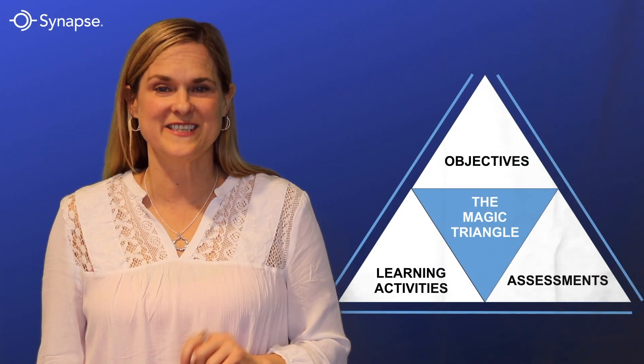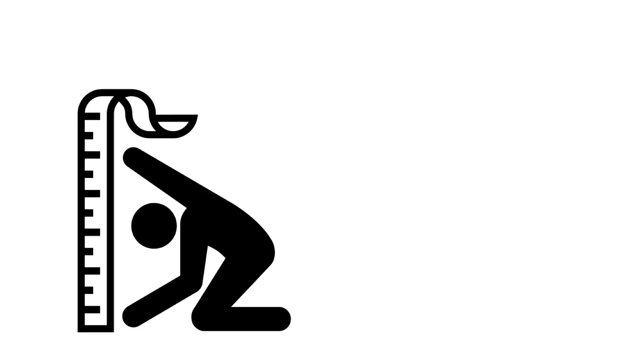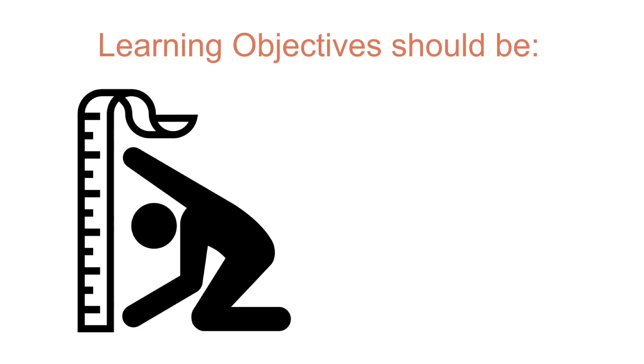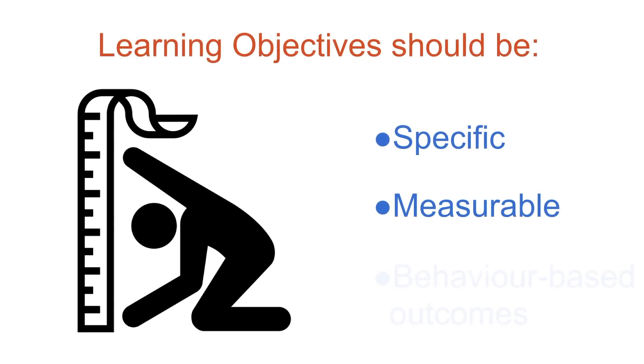Let's look at the first segment: objectives. When writing learning objectives, it's important to remember that goals are outcomes for the students, not for the L&D team. Learning objectives should be written in specific and measurable terms. Once the objective is correctly established, it'll help guide the creation of effective and focused training.